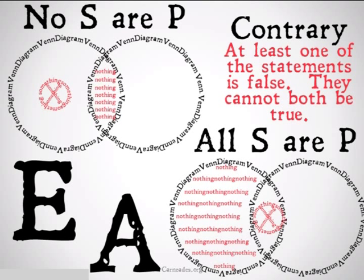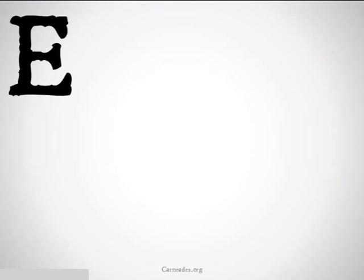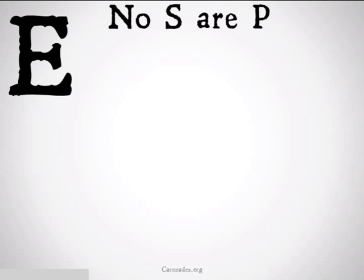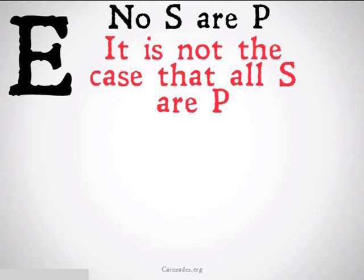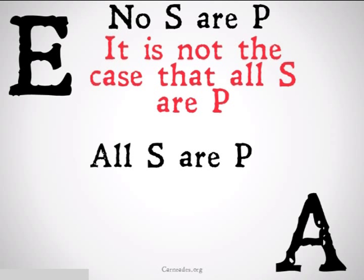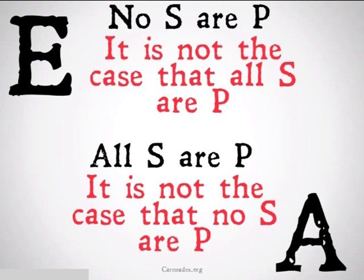What we can do with contrary is actually make some arguments. We can take No S are P and conclude it is not the case that All S are P, because they can't both be true. Also, if we have All S are P, we can conclude it is not the case that No S are P.